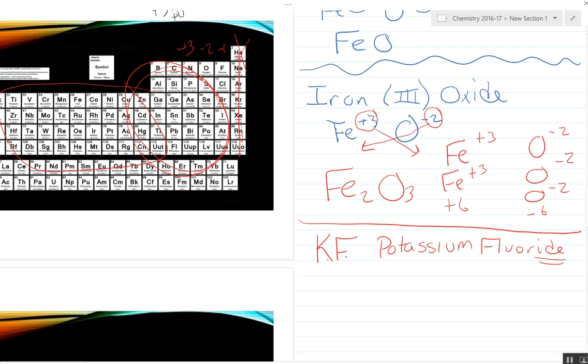Next one is barium chloride. We don't have to worry about prefixes, remember, so this is barium chloride. And we don't have to worry about Roman numerals either because barium is in the second column.